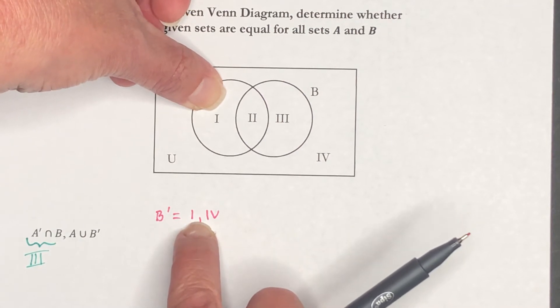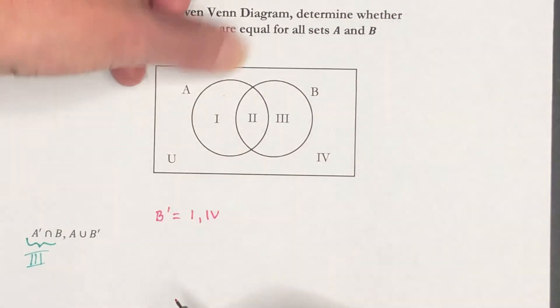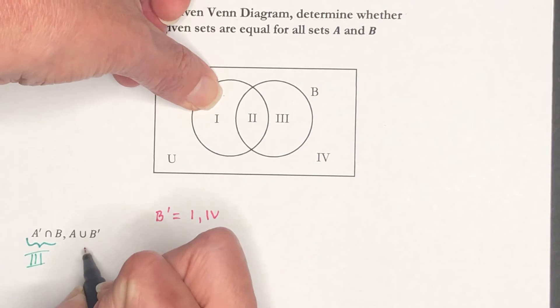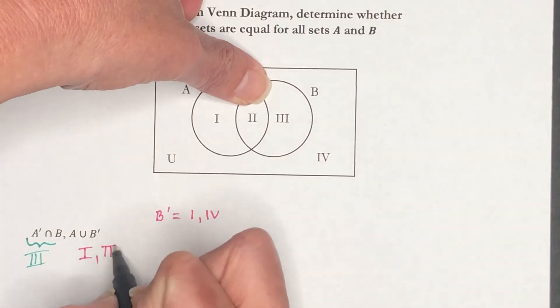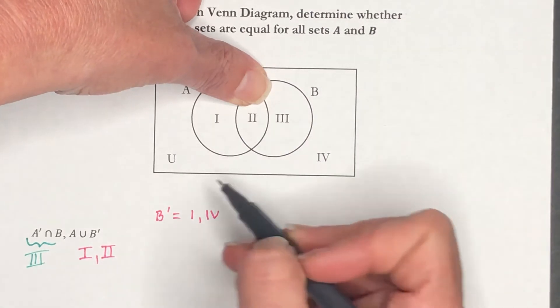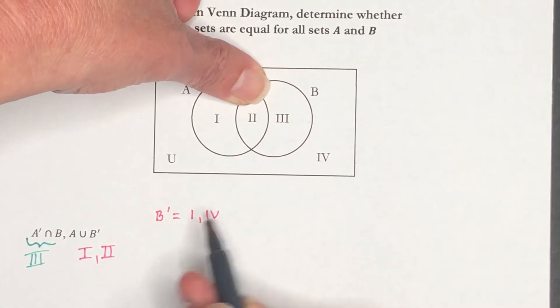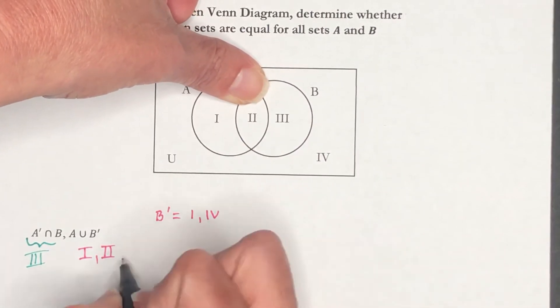So right here, that's going to give me region 1. Region 2, because it is in A. And then what else is in B complement? There's the 1, and then so I also need a 4.